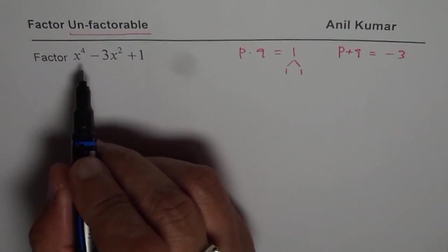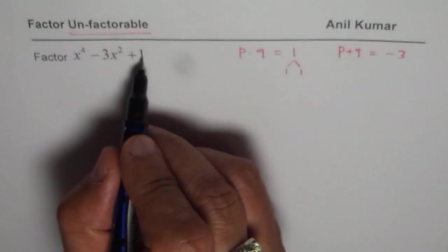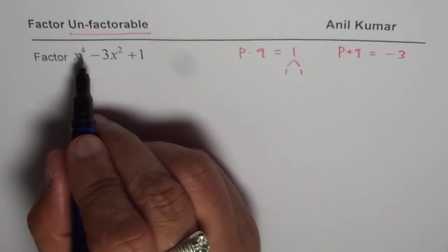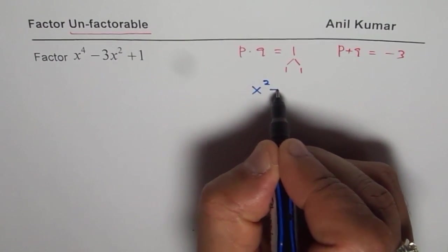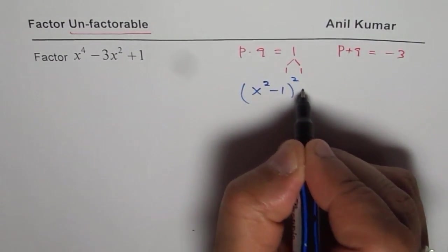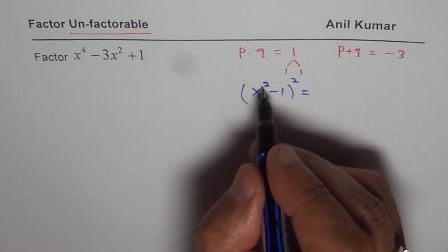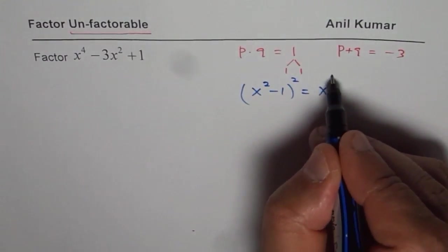What we can think about is 1 is 1^2 and we have x^4. How about if I have, let's say, (x^2 - 1)^2, what is that equal to?